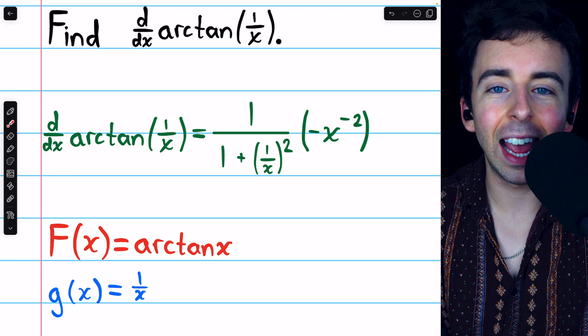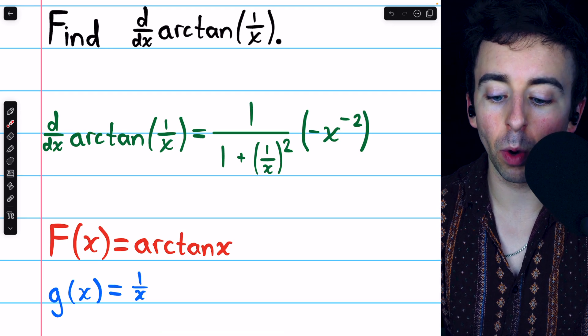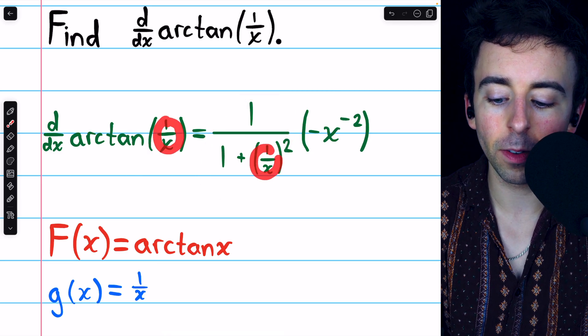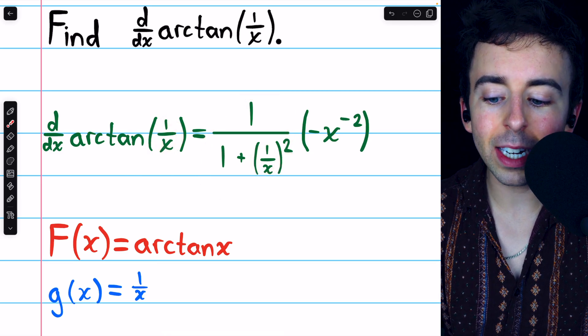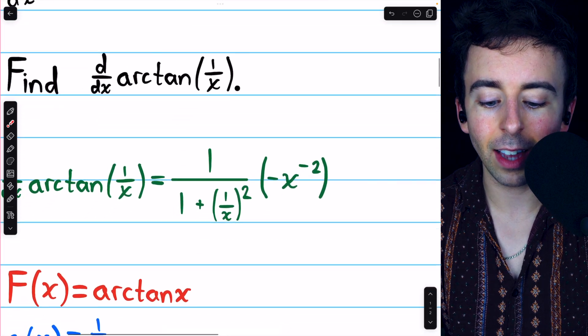The derivative of arctan x is 1 over 1 plus x squared, so we'll have 1 over 1 plus the inside function squared. Then, we need to multiply by g prime, the derivative of the inside function.